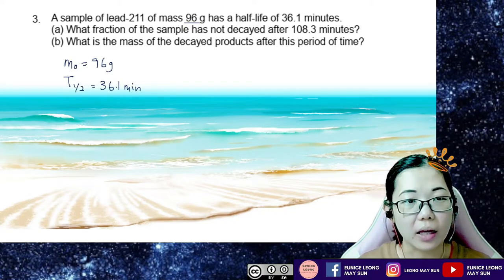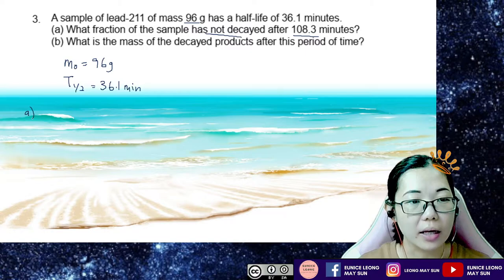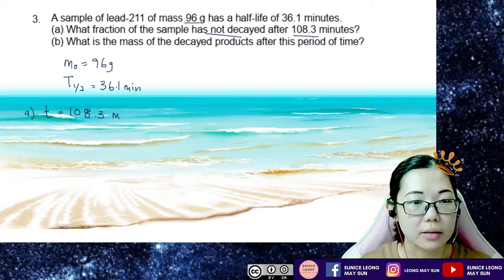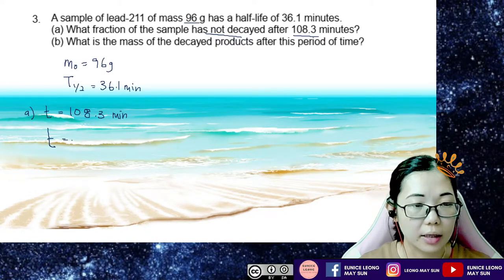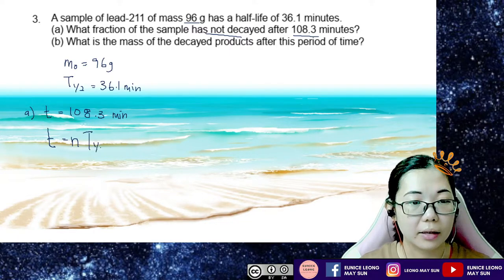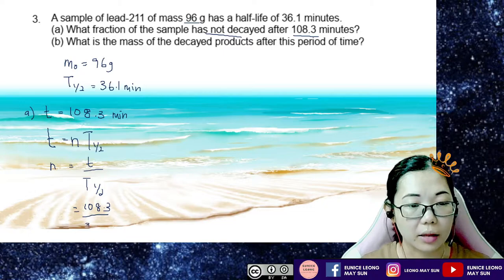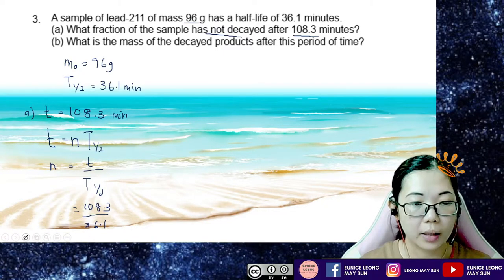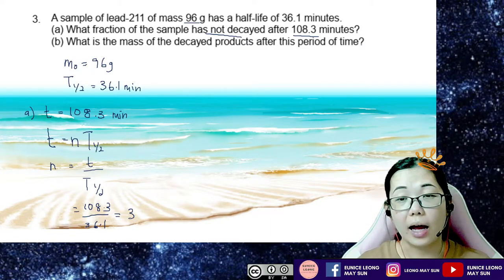Question A asks: what fraction of the mass has not decayed after 108.3 minutes? The total time taken is 108.3 minutes. I need to find how many half-lives there are using the formula n = t / half-life. So n = 108.3 divided by 36.1, which gives 3. There are 3 half-lives that have taken place at 108.3 minutes.